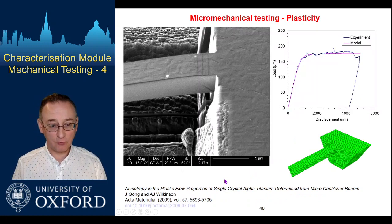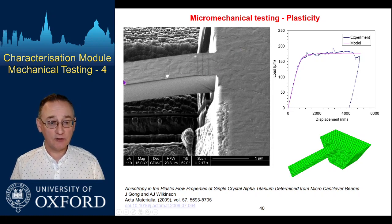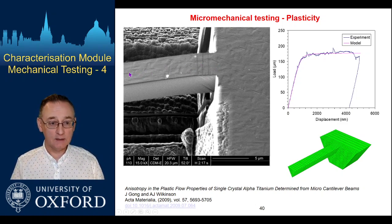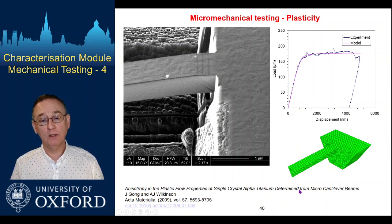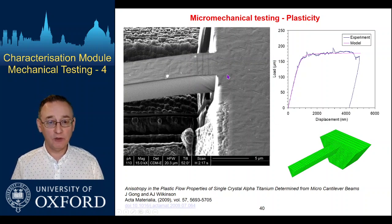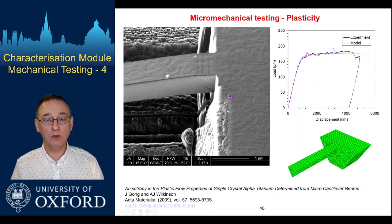You can also use this to probe plasticity. This is work with Jicheng Gong looking at titanium. Here's a freestanding triangular micro-cantilever — a sort of micro-toblerone shape. Here's a finite element model rendition of it. We can displace the free end and work out what's going on in terms of the stresses, which are largest near the built-in end. You can see slip features on the top surface and on the inclined side surface as well, so the plasticity is contained within that built-in end region.